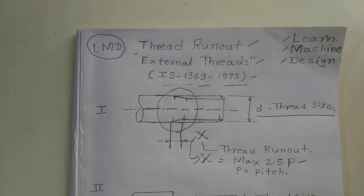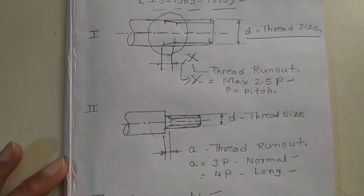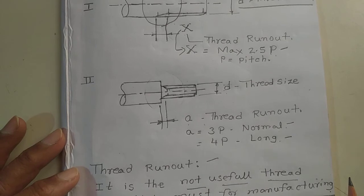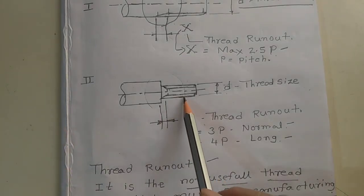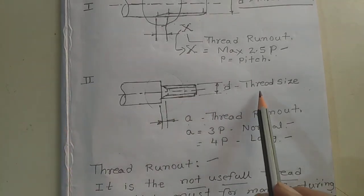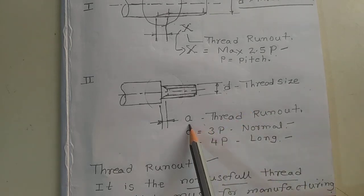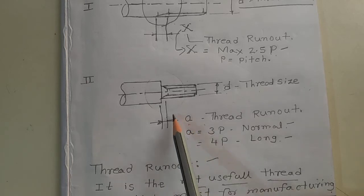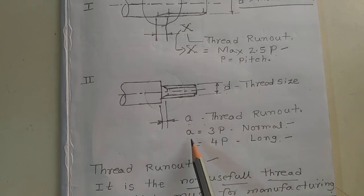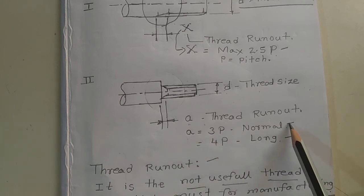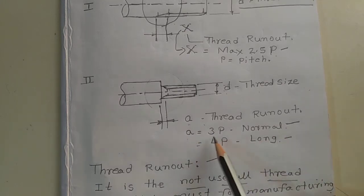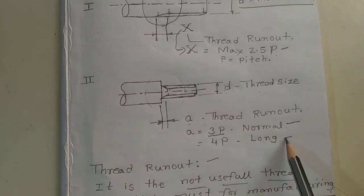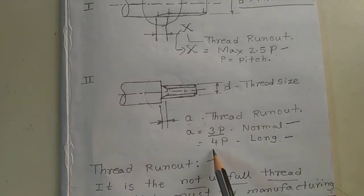We have another example. In this example, D is the thread size and A is the thread runout. In this kind of design situation, the A dimension should be — in the normal case it should be 3 times the pitch, and in the special case we can maintain 4 times the pitch also.